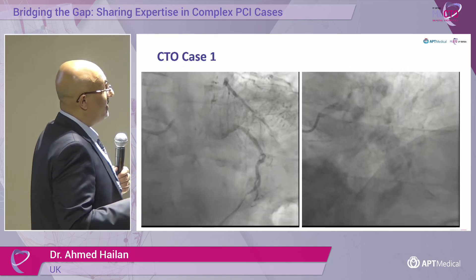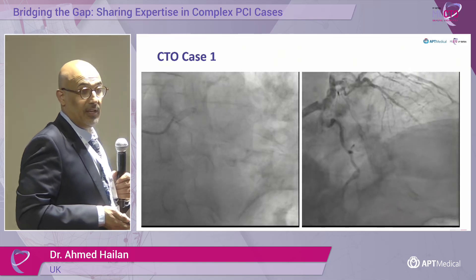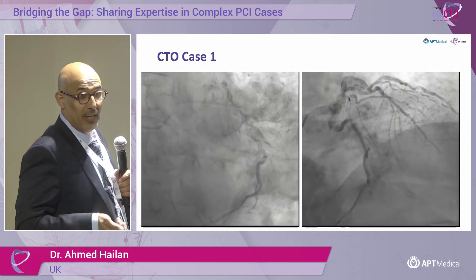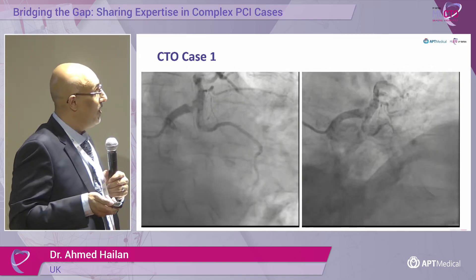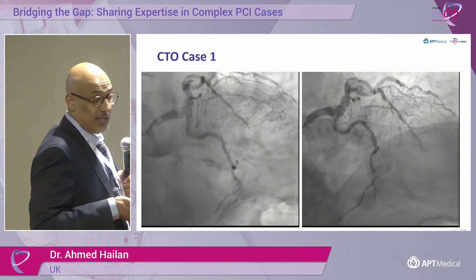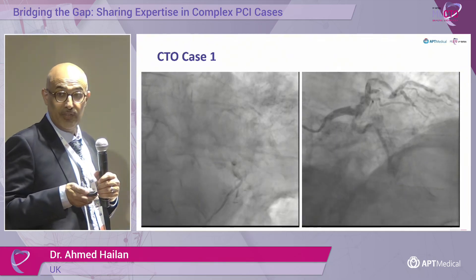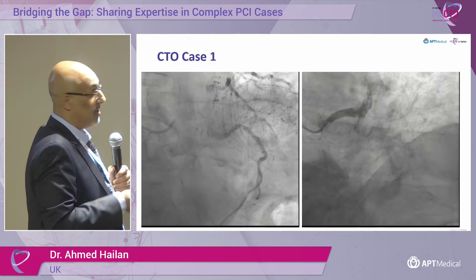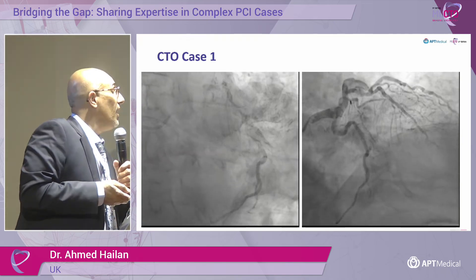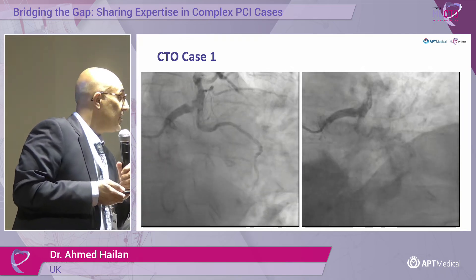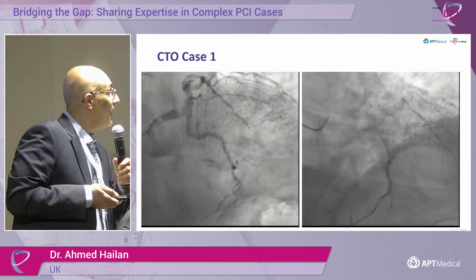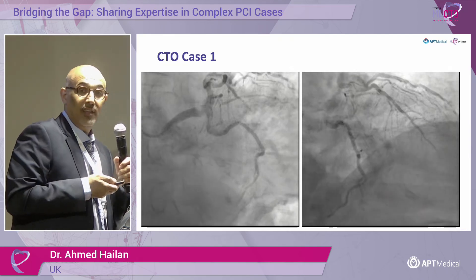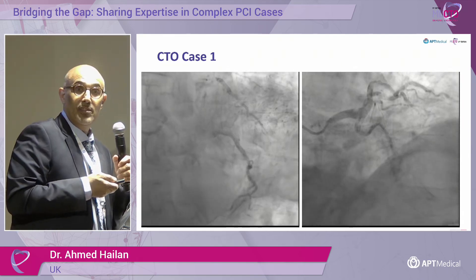This is a case you might see on a daily basis - quite complex. Using a SYNTAX score, this would favor surgery over PCI, or one could argue for medical treatment. The patient was taken to the heart team for a decision, which sometimes they do not actually make - they just make it a bit more difficult. Who would think this should be medical treatment, surgery, or PCI?